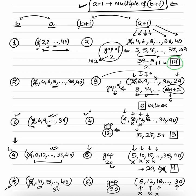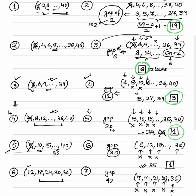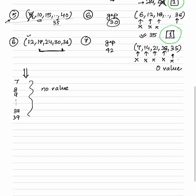Summing up: when b = 1 we get 19 values; b = 2 gives 6; b = 3 gives 3; b = 4 gives 1; b = 5 gives 1; b = 6 and beyond give 0. Total: 19 + 6 + 3 + 1 + 1 = 30 values. The moral of the story for CAT is: if you ever get a question like this, consider skipping it. The key fundas — a is a multiple of b, a plus 1 is a multiple of b plus 1 — may help in other questions.